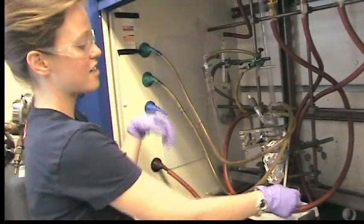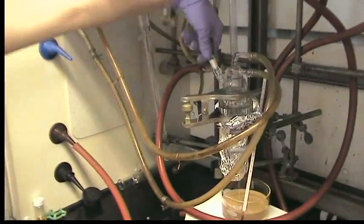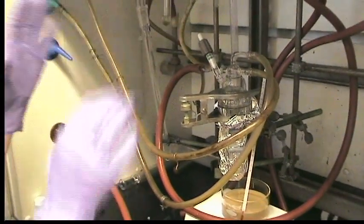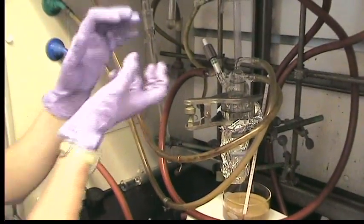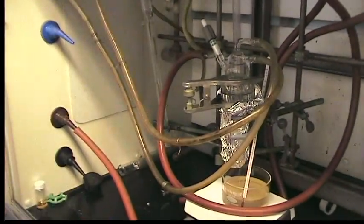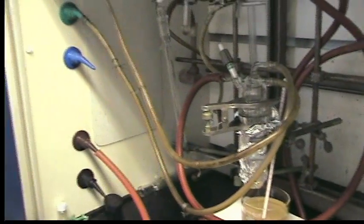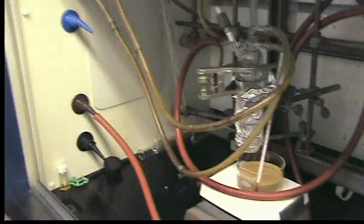So now that this line has been pumped out for a while, we'll open it to the sublimator. Now that we have a cold finger and we have vacuum going, we'll drape this with another piece of aluminum foil and we'll just put the bottom of the sublimator into the oil bath.